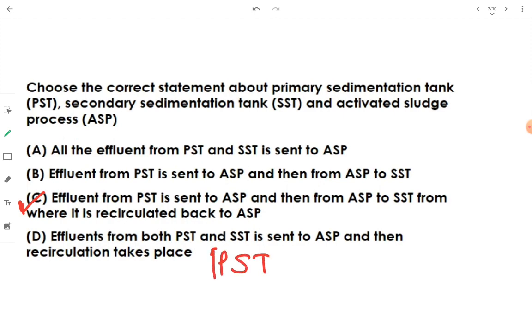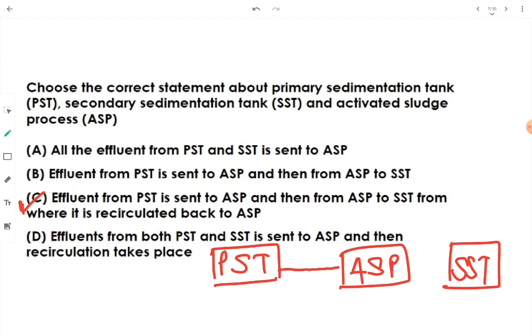See. This is PST. For example, this is the primary sedimentation tank. Then, we are having this ASP, activated sludge process unit. Then, we are having this SST, means secondary settling tank. From PST, the effluent goes to ASP. Then, from ASP, the effluent goes to secondary settling tank. Then, if we get the desired amount of treatment, then we will send it to effluent. We will send to wastewater.